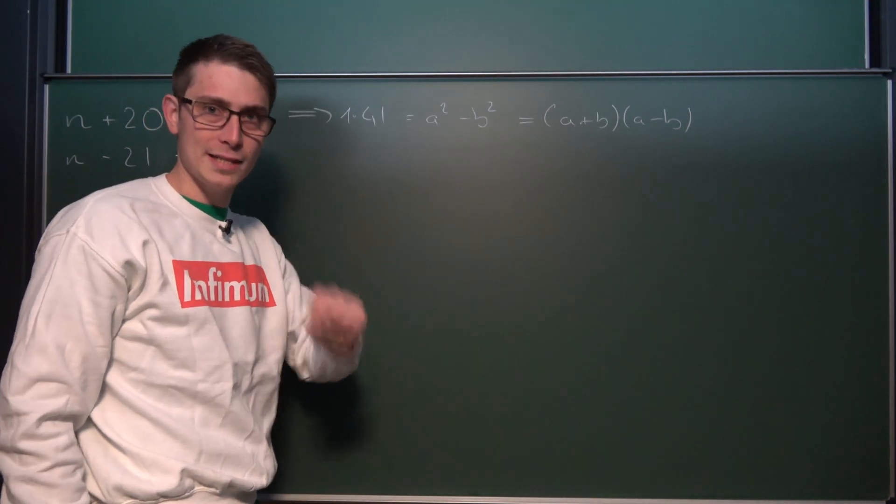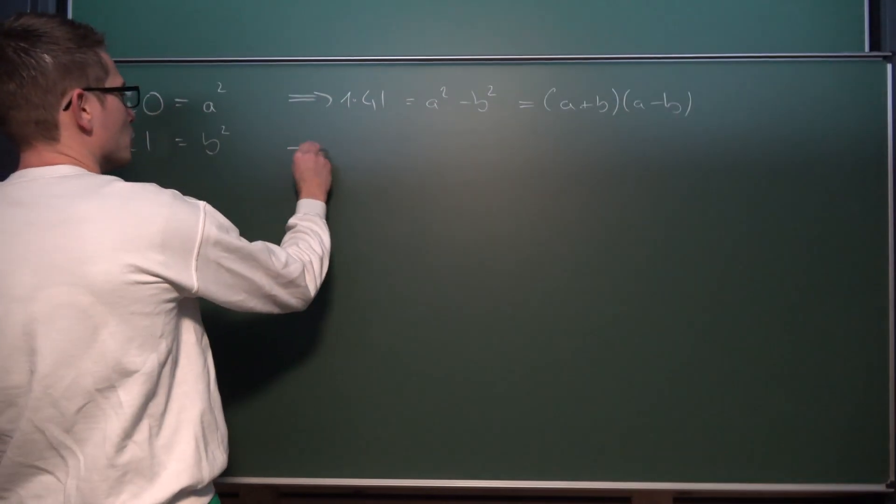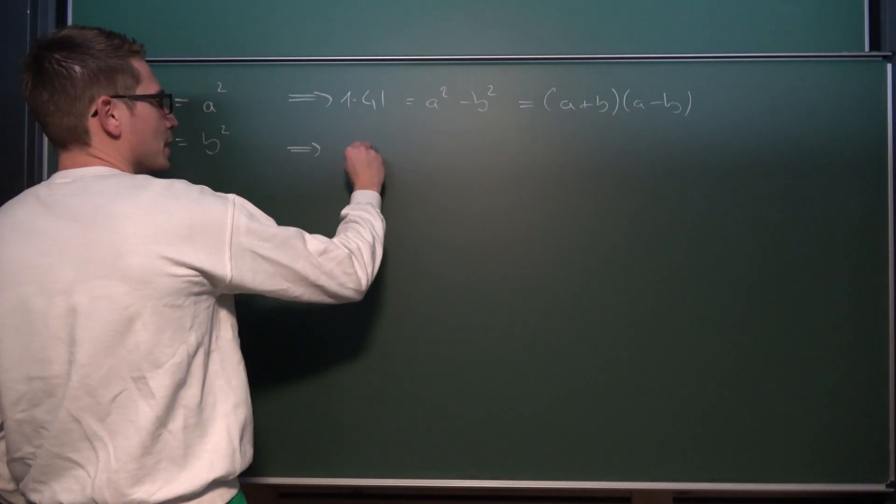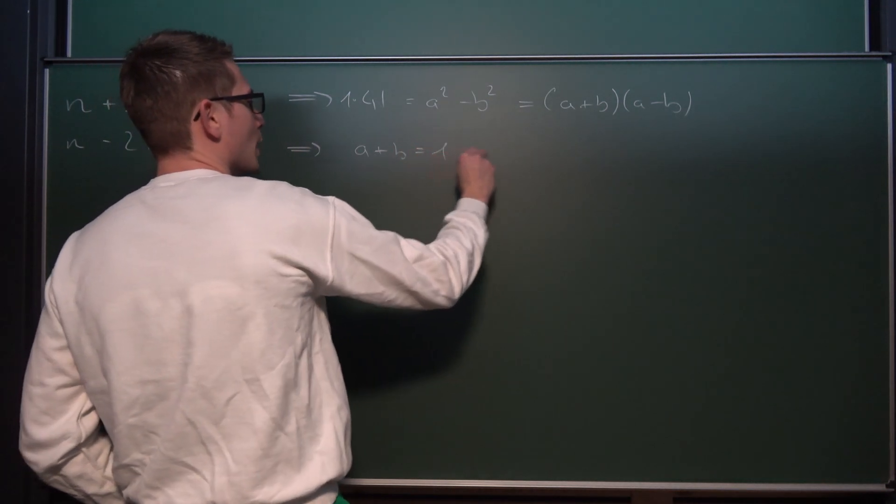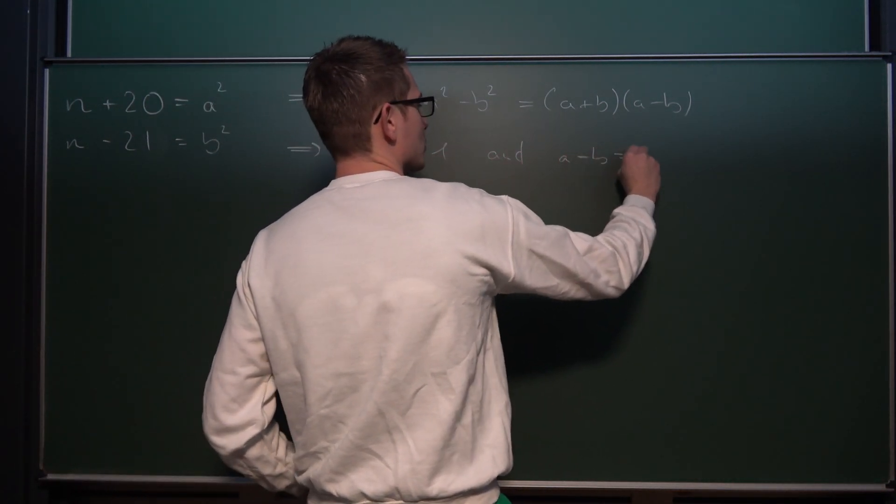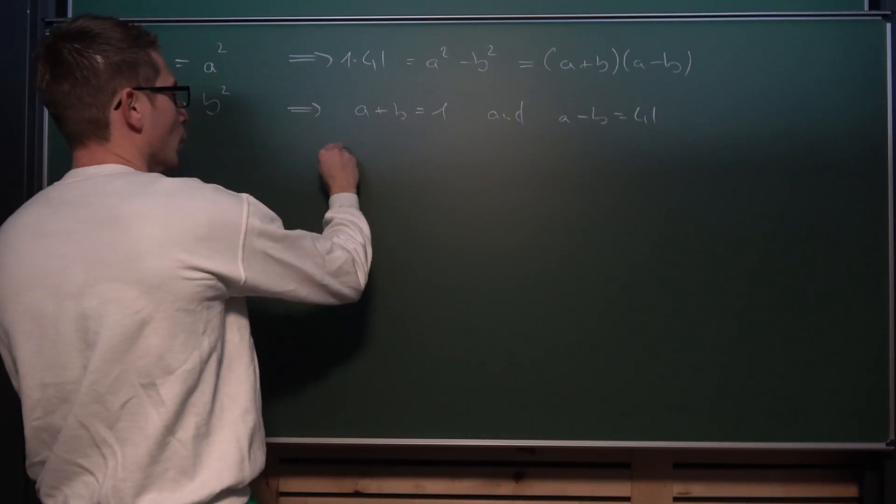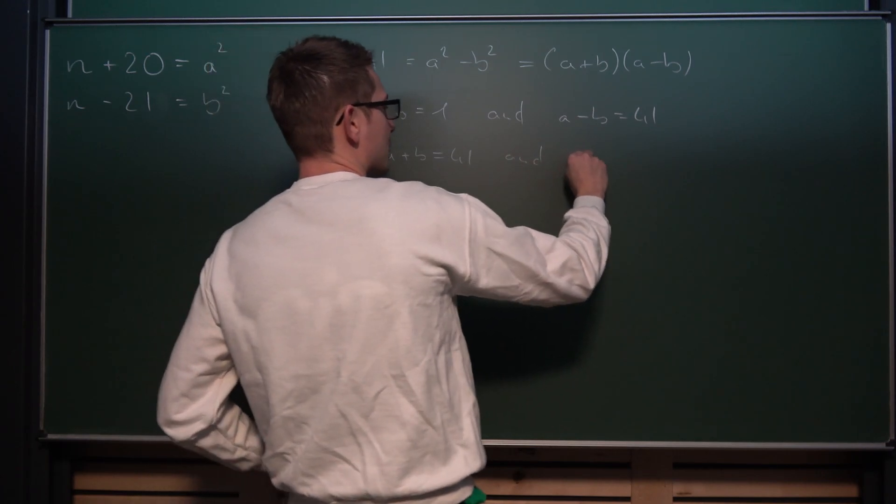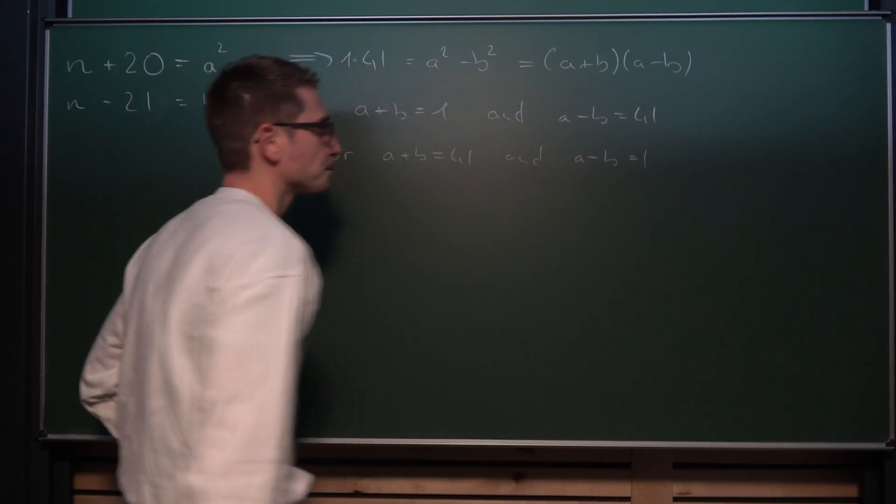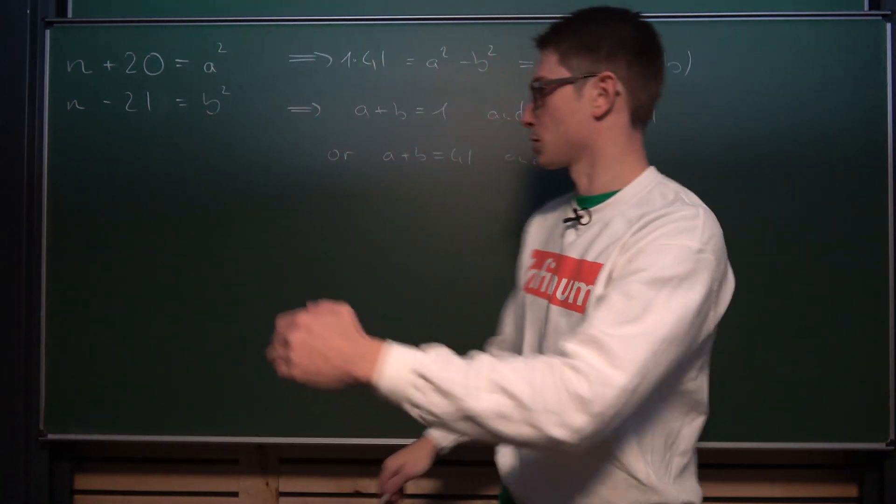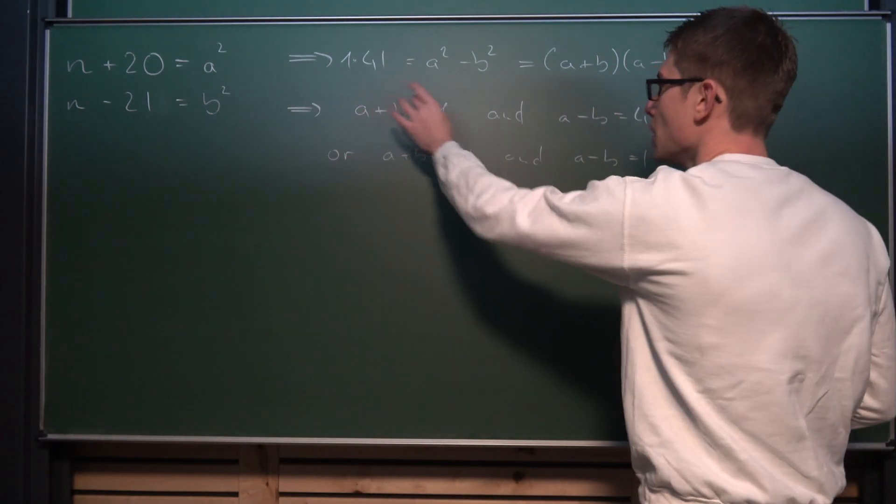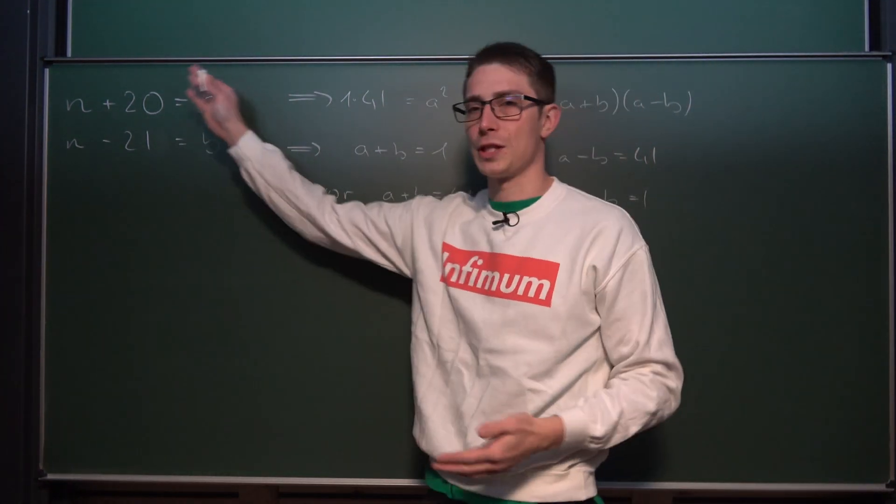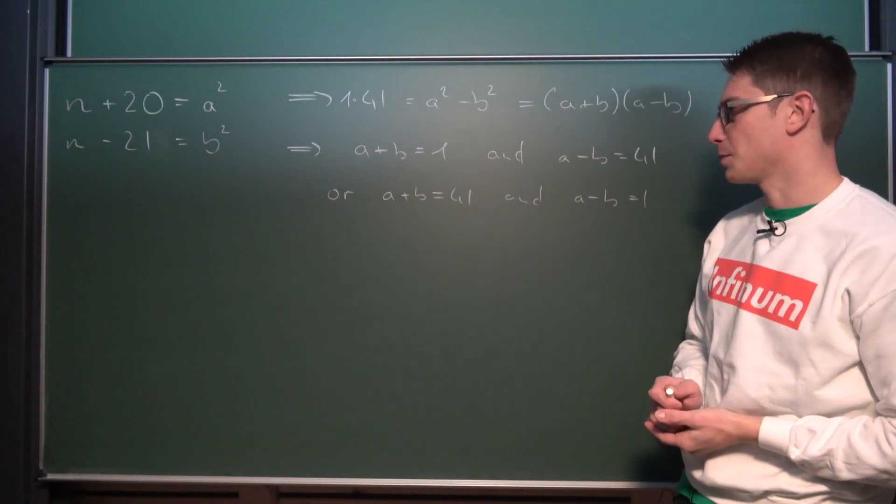Those are our two cases which we are going to inspect. Resulting in two results for now: A plus B equals 1 and A minus B equals 41, or A plus B equals 41 and A minus B equals 1. Now we are going to go through this logical chain one after another with both systems being solved, and then we are going to see what our resulting N out of the natural numbers can quite possibly be.